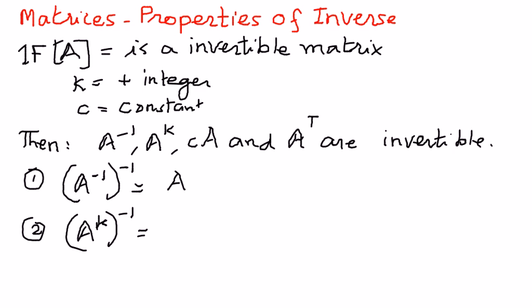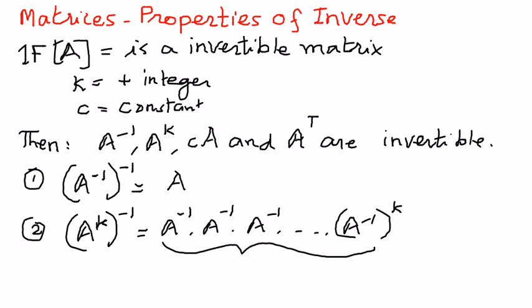we have seen this in our exponential rules, we can expand this as A to the power of negative 1 times A to the power of negative 1 times A to the power of negative 1, all the way to A to the power of negative 1, K factors. Therefore, that is one property.